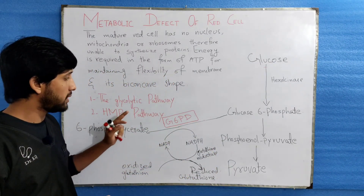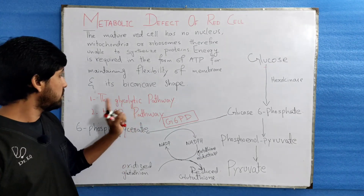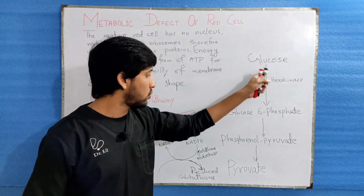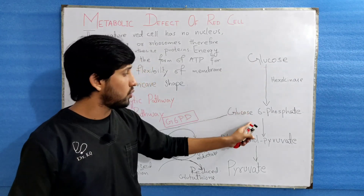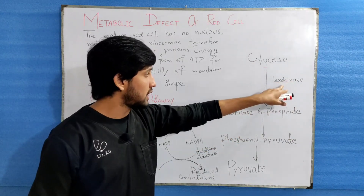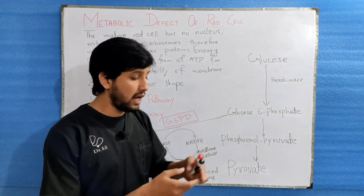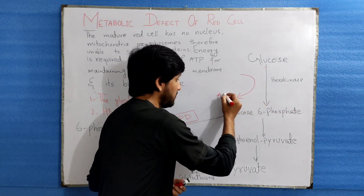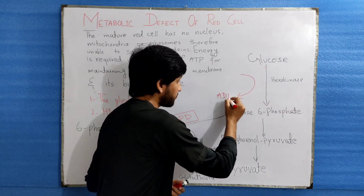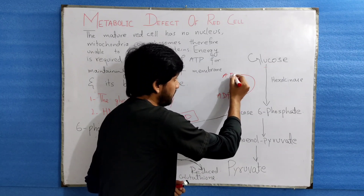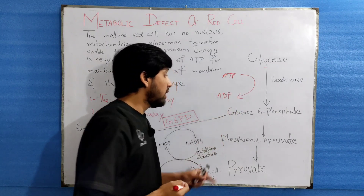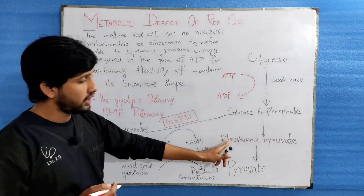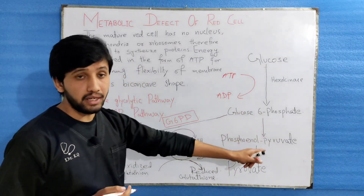The first pathway is the glycolytic pathway, which converts glucose into glucose-6-phosphate through the enzyme hexokinase. In this step, ATP is converted into ADP.